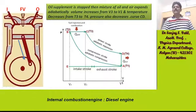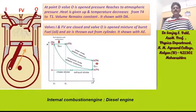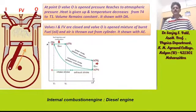The mixture of oil and air expands adiabatically. Volume increases from V3 to V1, and temperature decreases from T3 to T4, shown with curve CD. At point D, the outlet valve O is opened, pressure reaches atmospheric pressure, heat is given up, and temperature decreases from T4 to T1. Volume remains constant, shown with curve DA.